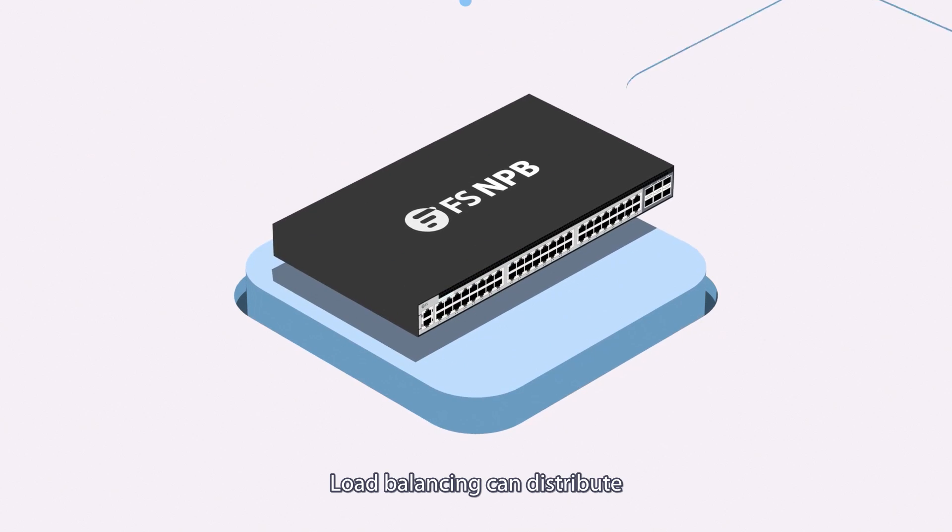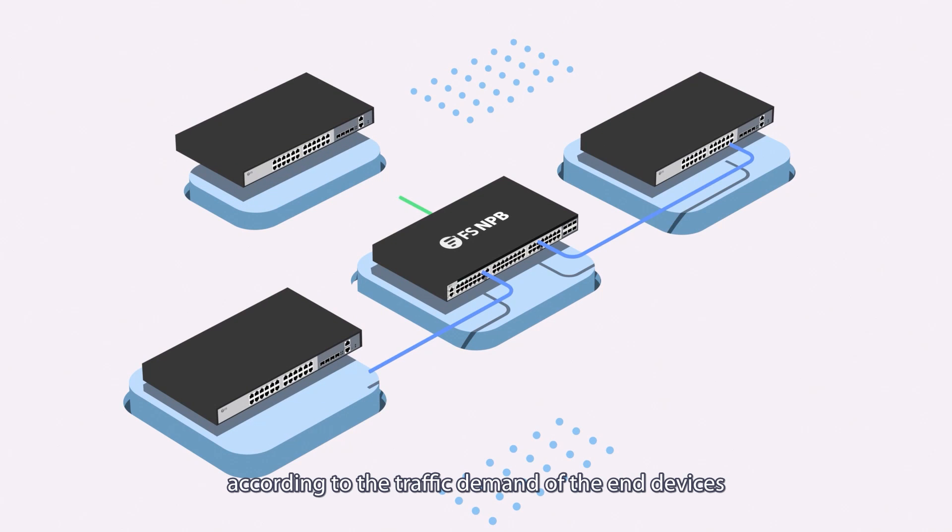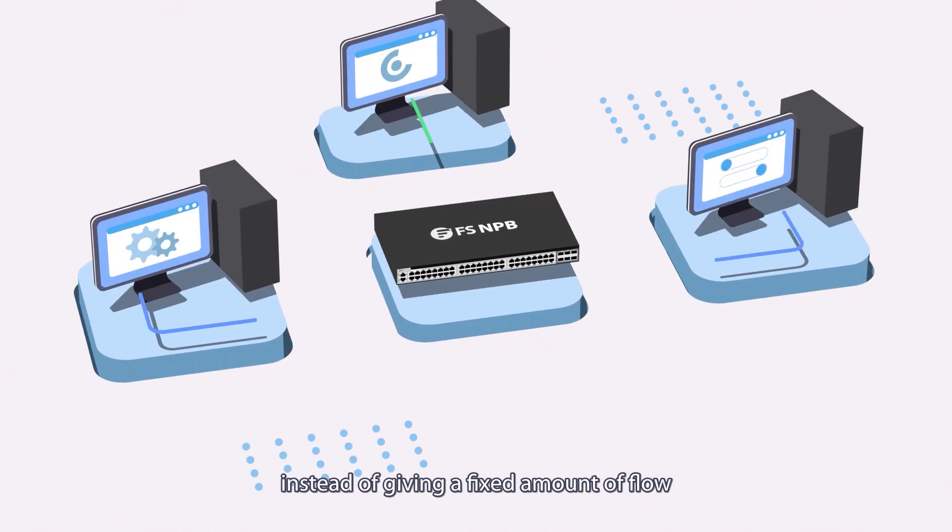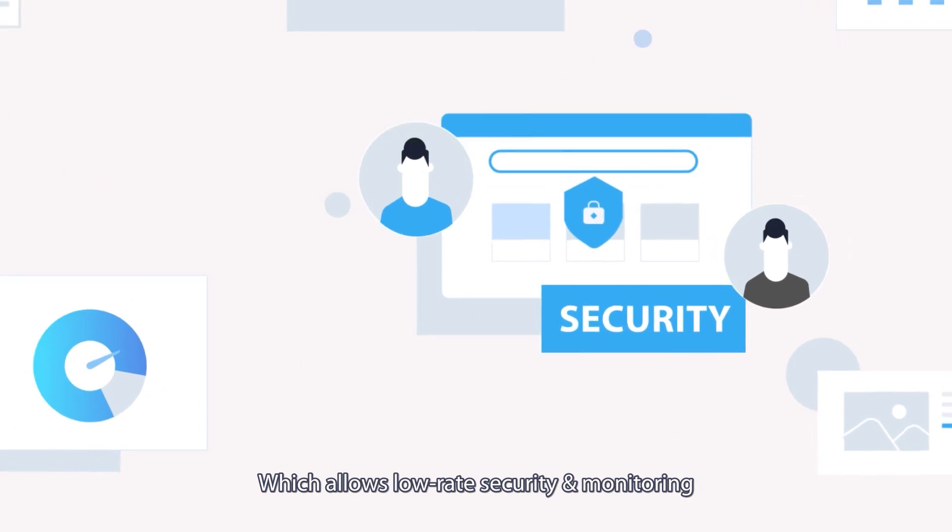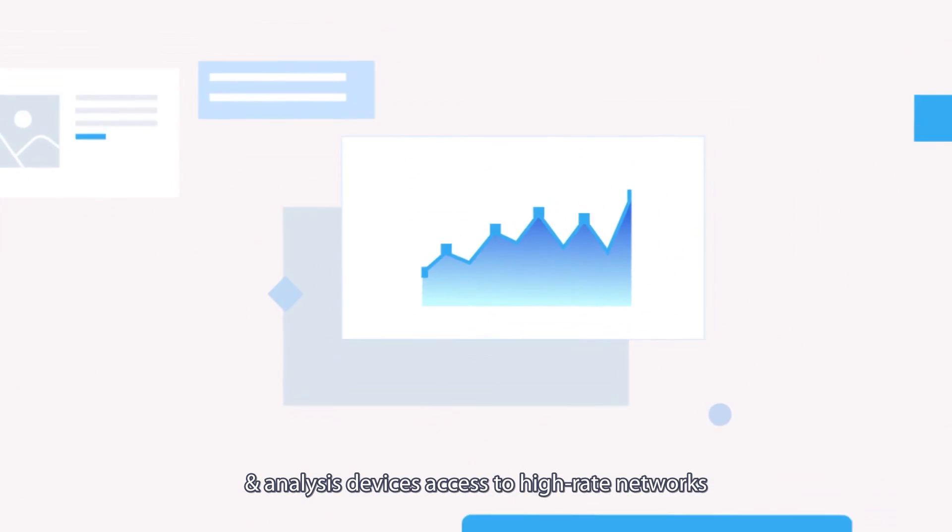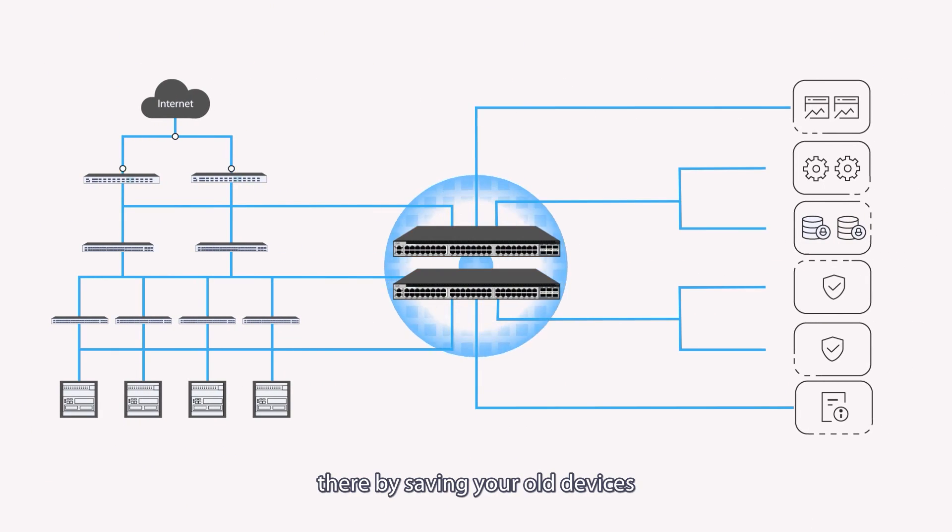Load balancing can distribute the right amount of traffic to each device according to the traffic demand of the end devices, instead of giving a fixed amount of flow, which allows low-rate security and monitoring and analysis devices access to high-rate networks by equipping each device with the right traffic, thereby saving your old devices and increasing device utilization.